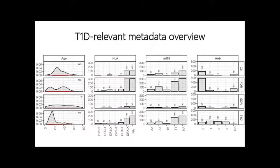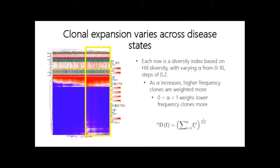To give an overview of metadata relevant to type 1 diabetes: plotted on each row is one of the groups — controls, first degree relatives, second degree relatives, and type 1s. The age distribution shows that type 1s are younger than controls, since these are just the samples we get in the clinic. We do have an age-matched mode in the first degree relatives, corresponding to siblings and parents of these patients. I've also plotted the distribution for high-risk HLA alleles — R689 is one example of a SNP associated with type 1 diabetes — and the total autoantibody count for these samples.